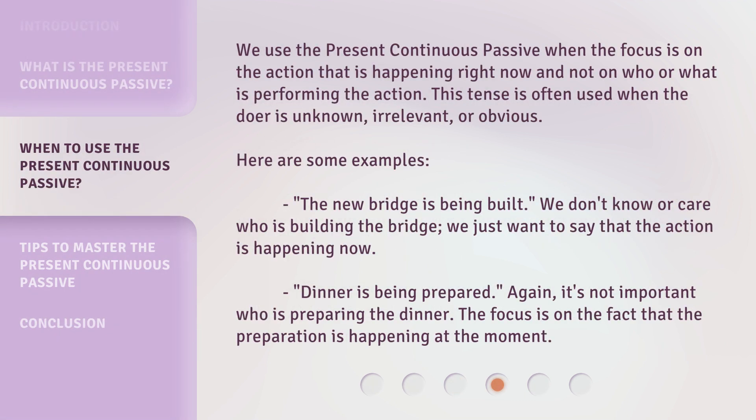We use the present continuous passive when the focus is on the action that is happening right now, and not on who or what is performing the action. This tense is often used when the doer is unknown, irrelevant, or obvious. For example: The new bridge is being built — we don't know or care who is building the bridge, we just want to say the action is happening now. Dinner is being prepared — it's not important who is preparing the dinner; the focus is on the fact that the preparation is happening at the moment.